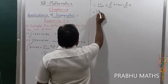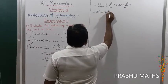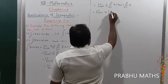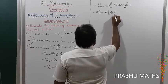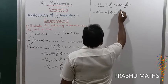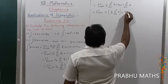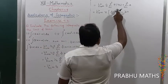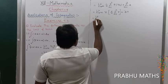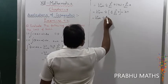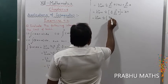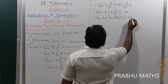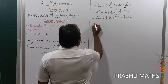That equals limit as n tends to infinity of 1 by n, times [5 by n times summation of r from 1 to n of r, plus summation of r from 1 to n of 4]. The summation of r from 1 to n equals n(n+1)/2, and summation of 4 from 1 to n equals 4n. So this equals limit as n tends to infinity of 1 by n, times [5 by n times n(n+1)/2 plus 4n].